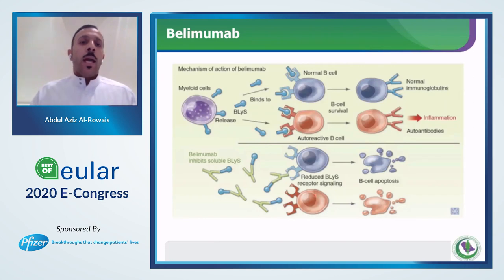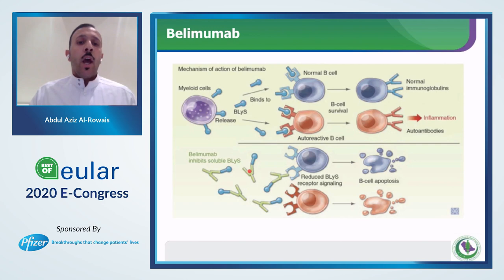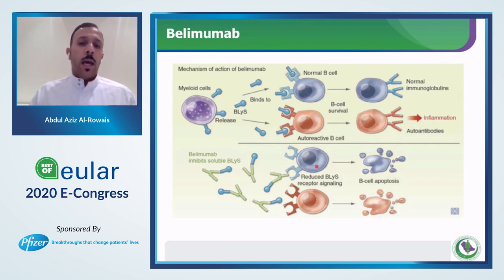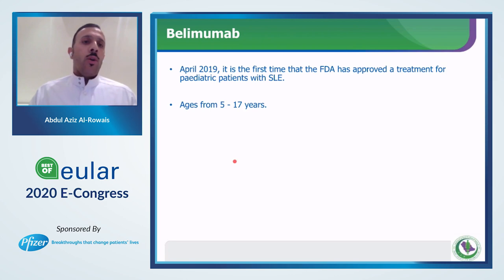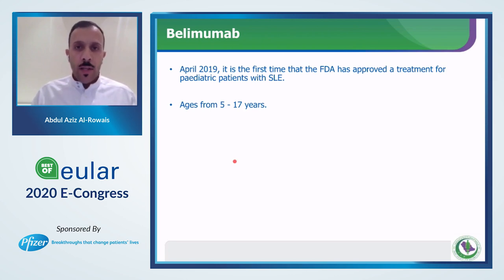Belimumab is a monoclonal antibody directed against the B-lymphocyte stimulator protein, blocking it from binding to the receptor on B-cell lymphocytes, which inhibits B-cell-mediated immunity and decreases the autoimmune response. In April 2019, belimumab became the first treatment to get FDA approval for use in pediatric patients with systemic lupus erythematosus — approved for patients aging from 5 up to 17 years.